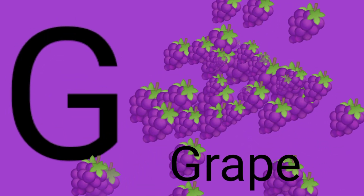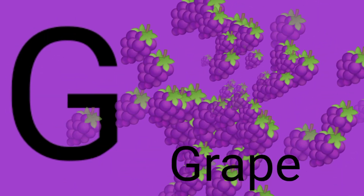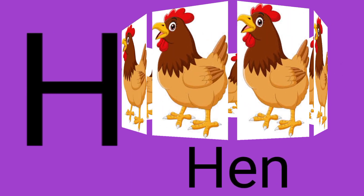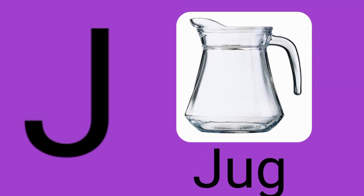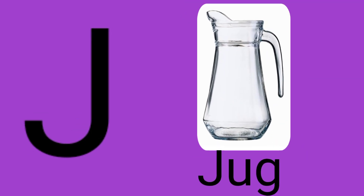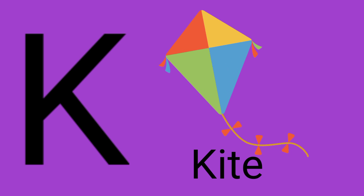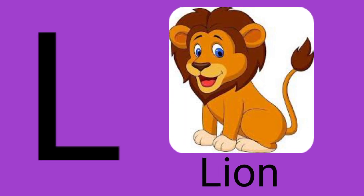G for grapes, H for hen, I for ice cream, J for jug, K for kite, L for lion.